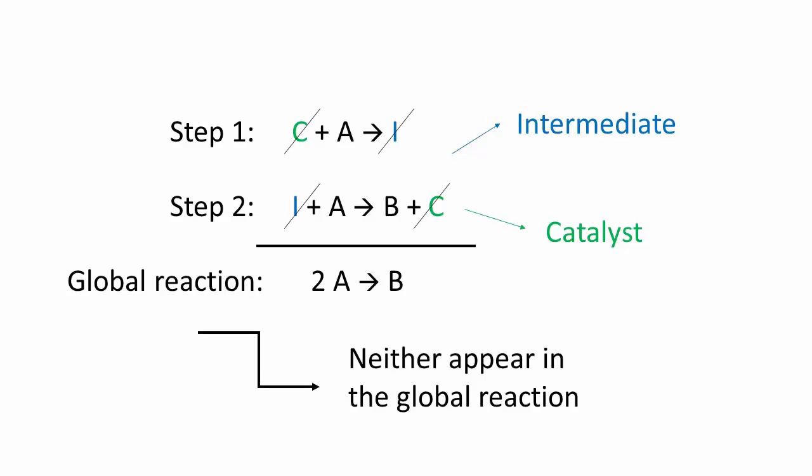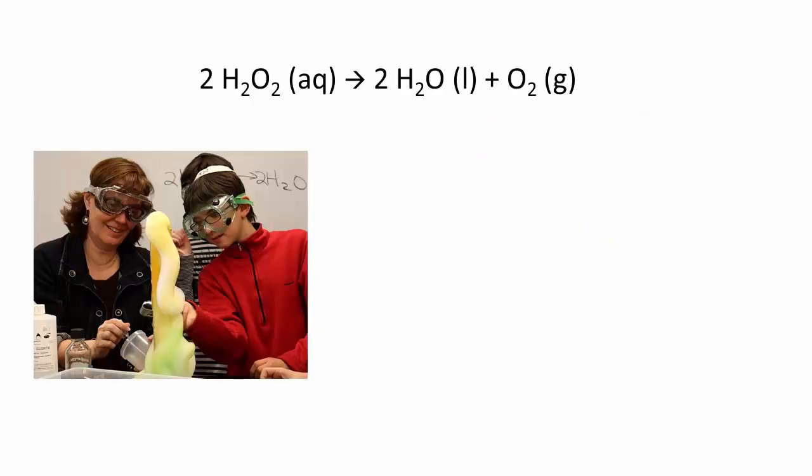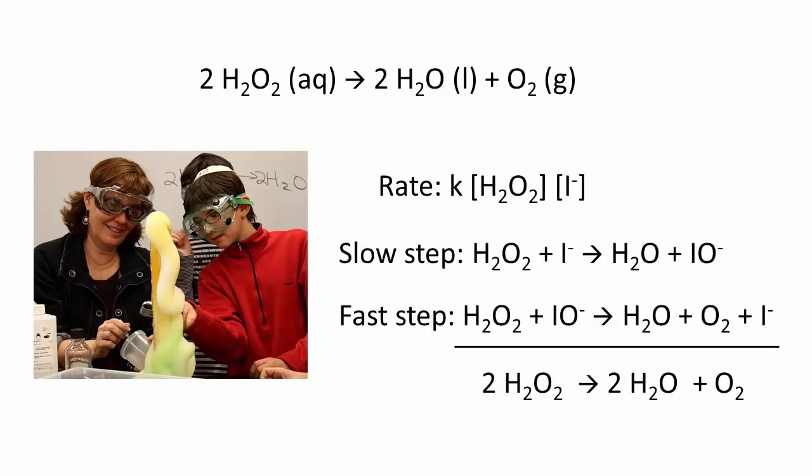To illustrate all these points, consider the decomposition of hydrogen peroxide. It is usually an extremely slow reaction. However, upon the introduction of an iodide salt, the reaction is very fast, and the kinetics of the global reaction is second order overall, first order in hydrogen peroxide and first order in iodide.